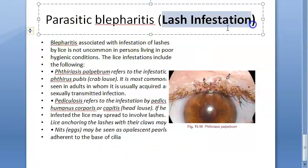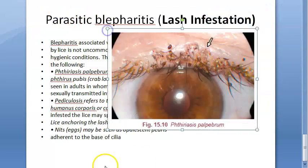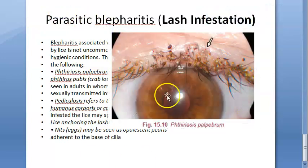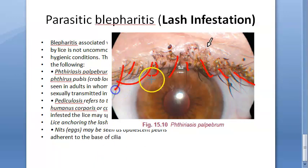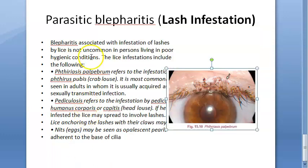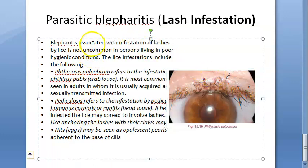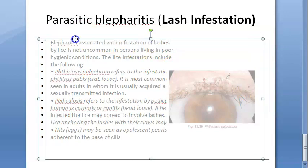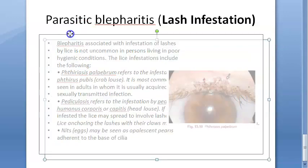Parasitic blepharitis is also called lash infestation. The term 'infestation' is used because parasites are involved — the lashes are what line the lid margin. In lash infestation, there will be parasites such as lice and their eggs. Blepharitis associated with infestation of lashes by lice is not uncommon.